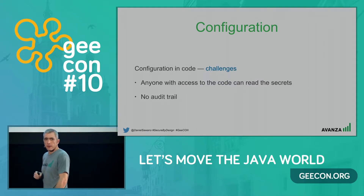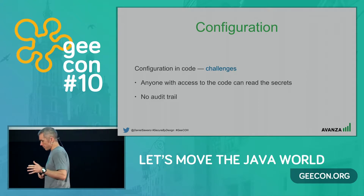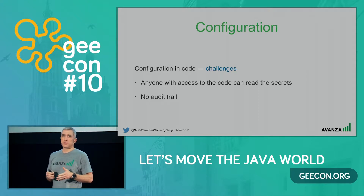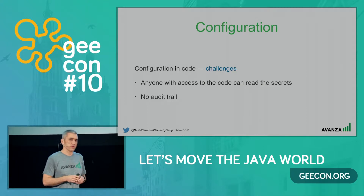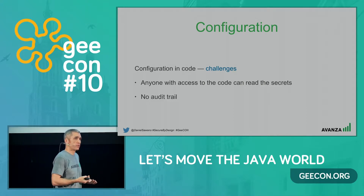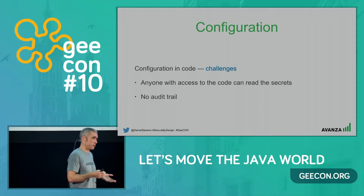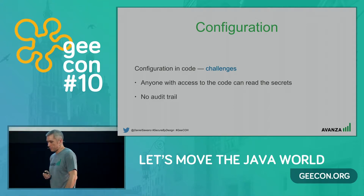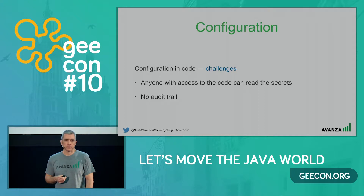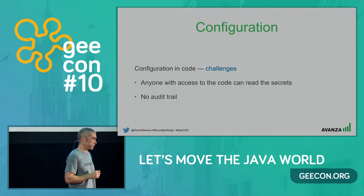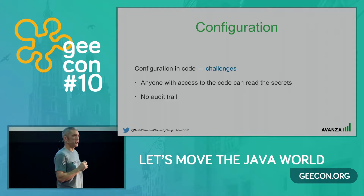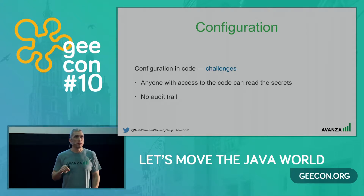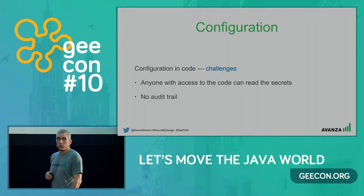If you put your passwords in the code, then anyone who has access to your code repository or version control system can read secrets, and you have no idea who read it, when, and what they read because there's no audit trail. You can download the code and do whatever you want - that's a pretty big issue from a security point of view. Luckily, this type of initial code always gets refactored, but the reason developers refactor it isn't necessarily security - it's because we want to deploy the application in different environments. So we extract the configuration and externalize it.